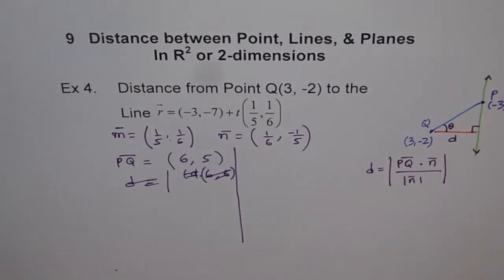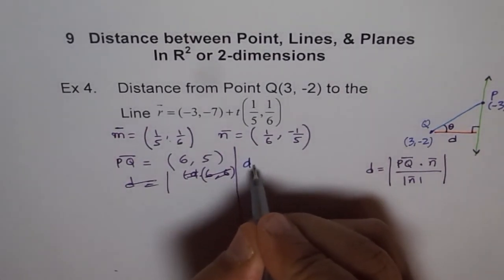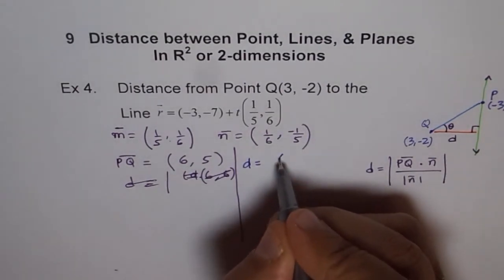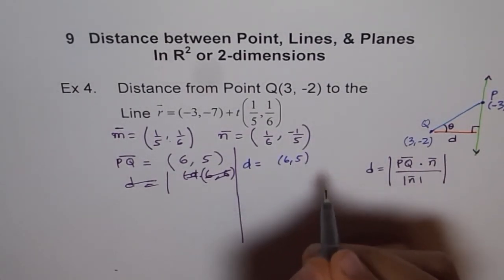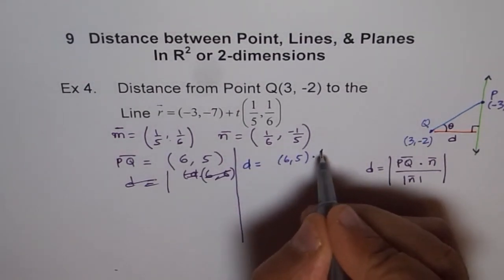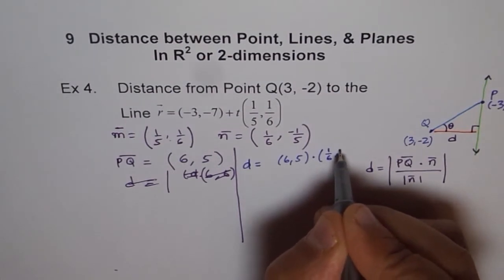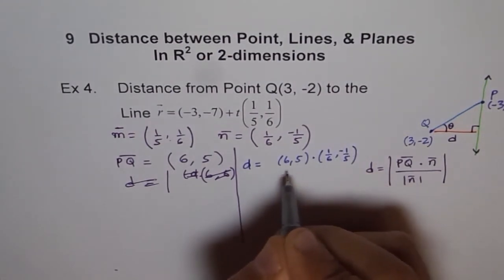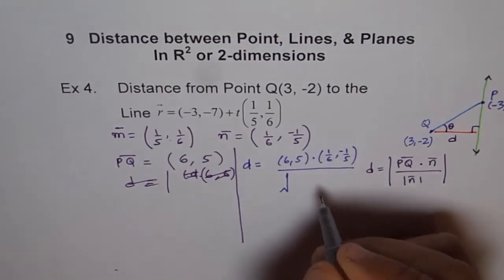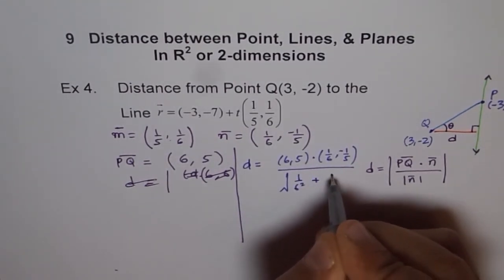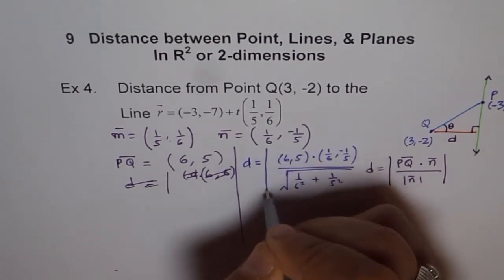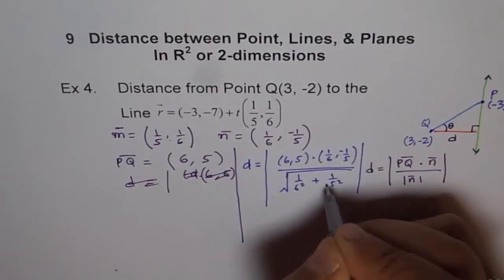Distance D equals PQ, which is (6, 5), dot normal, which is (-1/6, -1/5), divided by √[(1/6)² + (1/5)²]. The minus becomes positive, so I'm not writing that. This is what our normal is.